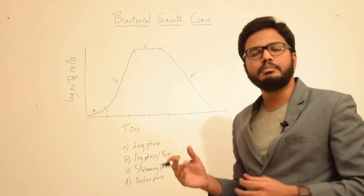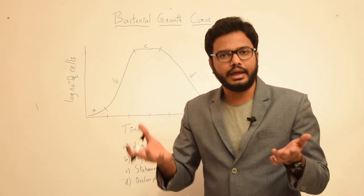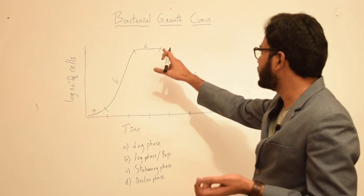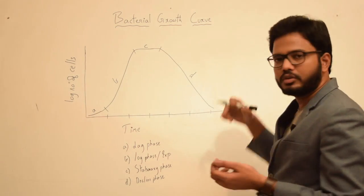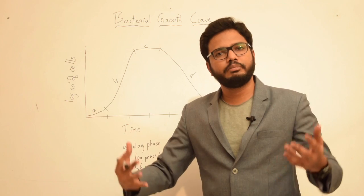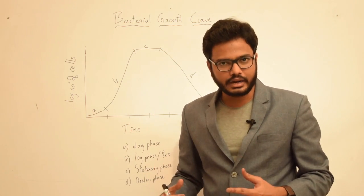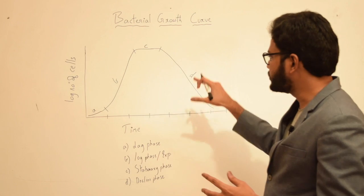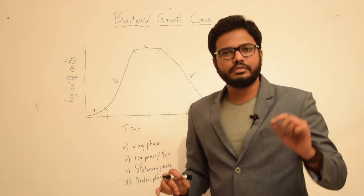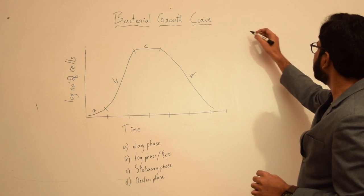In stationary phase, there is a balance between the number of cells being formed and the number of cells that are dying, resulting in a zero growth rate. In decline phase, because of accumulation of waste products — metabolites — and depletion of nutrients, there will be a decline in the number of viable cells. These are the phases which we come across in the bacterial growth curve.